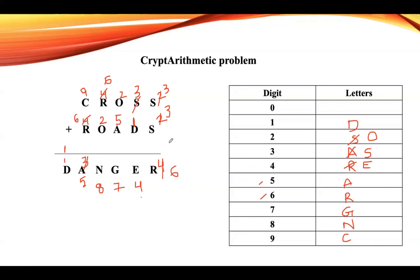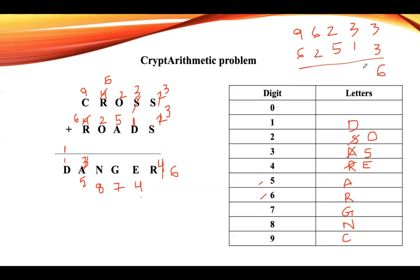This is the final solution. Adding CROSS — nine, six, two, three, three — and ROADS — six, two, five, one, three: three plus three is six; three plus one is four; five plus two is seven; six plus two is eight; nine plus six is fifteen with carry. So the result is one, five, eight, seven, four, six — which is DANGER. This is your solution.